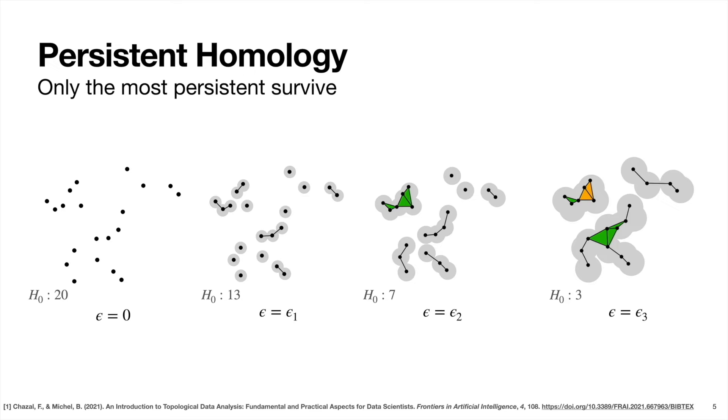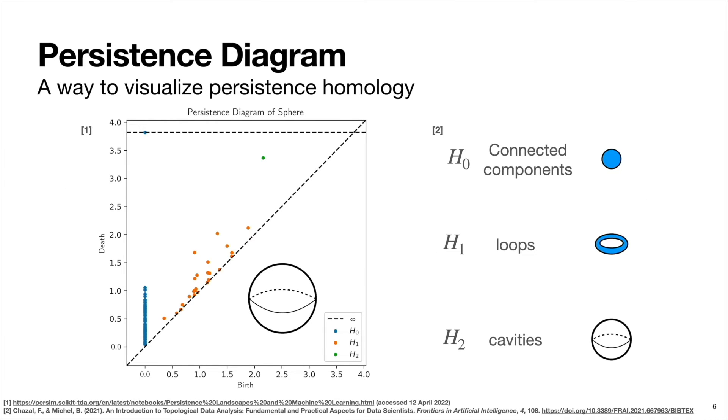So one good way to do this is by using a persistence diagram. These look something like the plot on the left here, which is showing the persistence diagram of a hollow sphere. And looking at the plot, each of these blue, orange, and green points corresponds to a topological feature, or in other words, a hole.